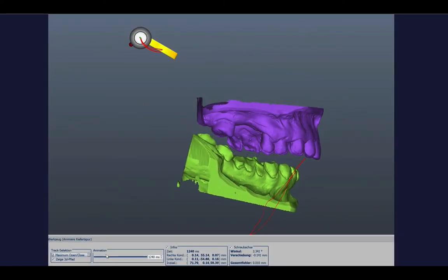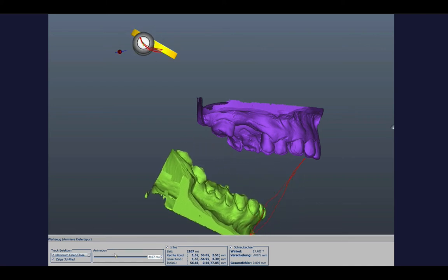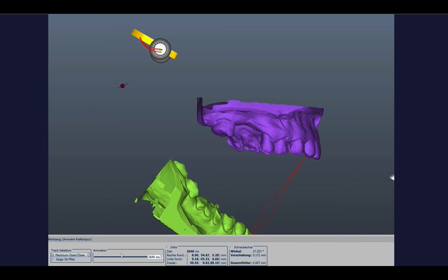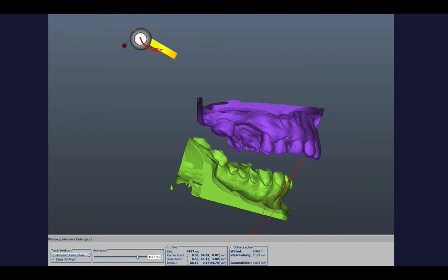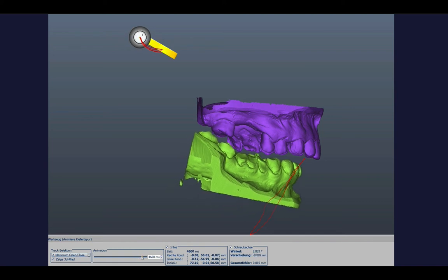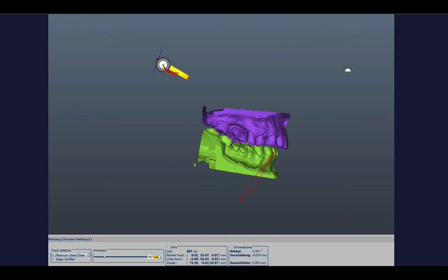Here again, this is a case where we have an axis which stays quite close to the condyles in the initial 10mm maybe. And then as the translation takes place, it moves away.